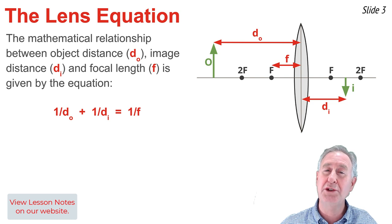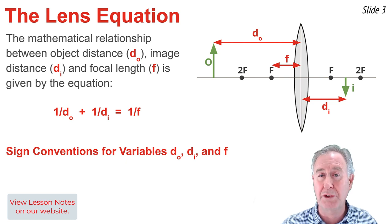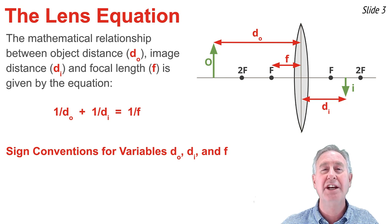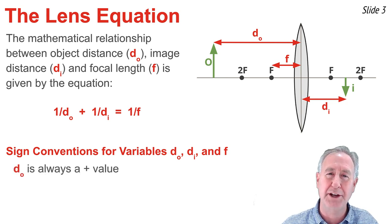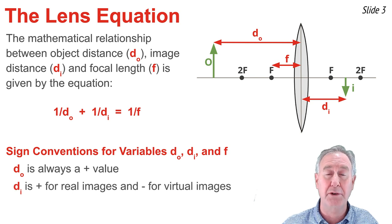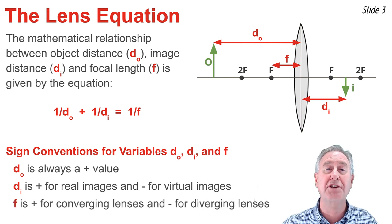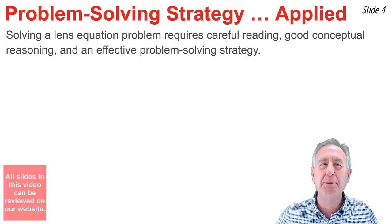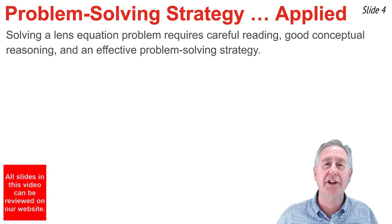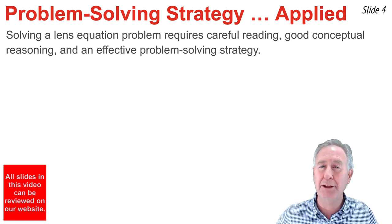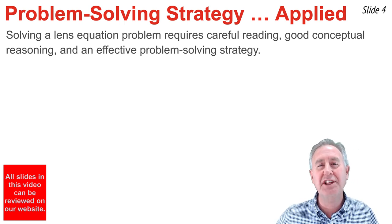When using the equations, you need to be aware that dO, dI, and f can have plus or minus signs, so it's useful to remember some conventions. For our purposes, dO will always be positive. dI will be positive for real images and negative for virtual images. The focal length f will be positive for converging lenses and negative for diverging lenses. A good problem solver in physics will always read the problem carefully, reason conceptually, and have an effective problem-solving strategy. Let's illustrate this with our first example.